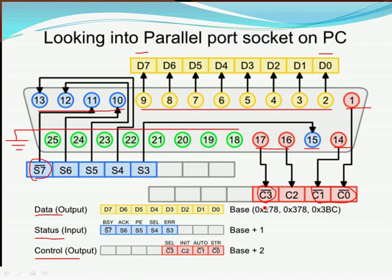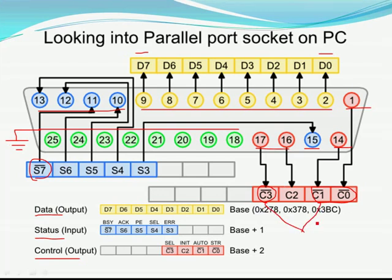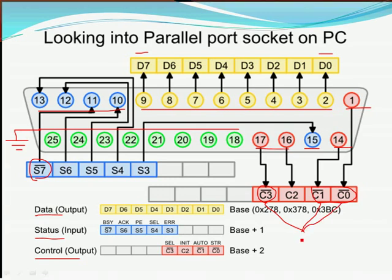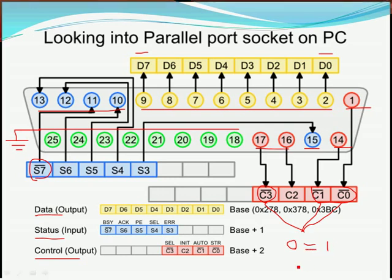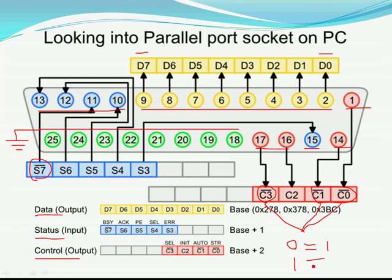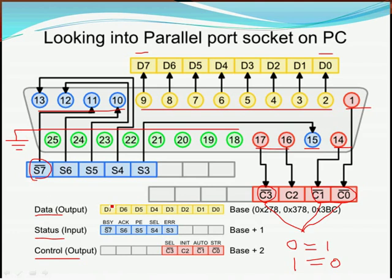It means the data that you send or receive from here will be converted to another form. In these C3, C1, C0 pins, if you want to send 0 bits, the output will be 1 bit. If you send 1 bit, the output will be 0. And this is the same for these pins.